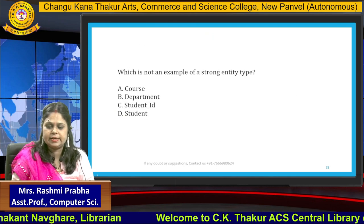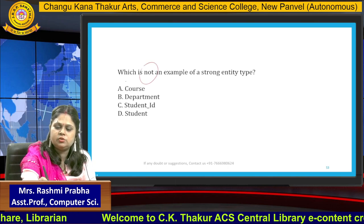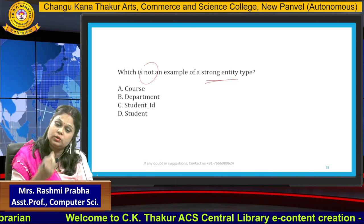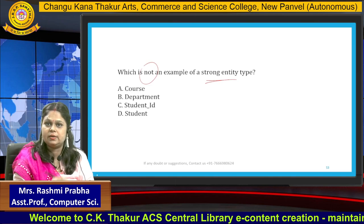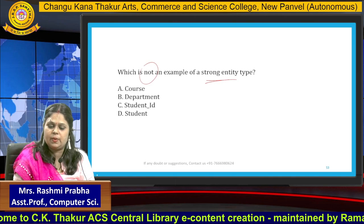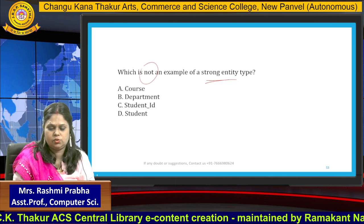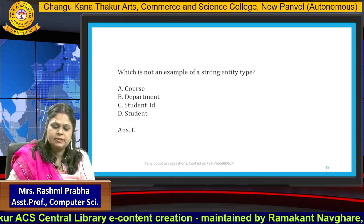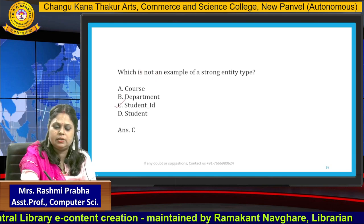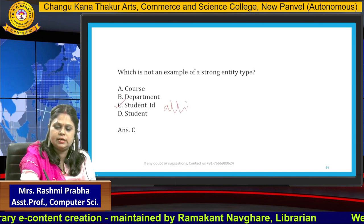The second question asks: which of the following is NOT an example of a strong entity type? The options are course, department, student ID, and student. The correct answer is student ID — it is not an entity; it is an attribute.